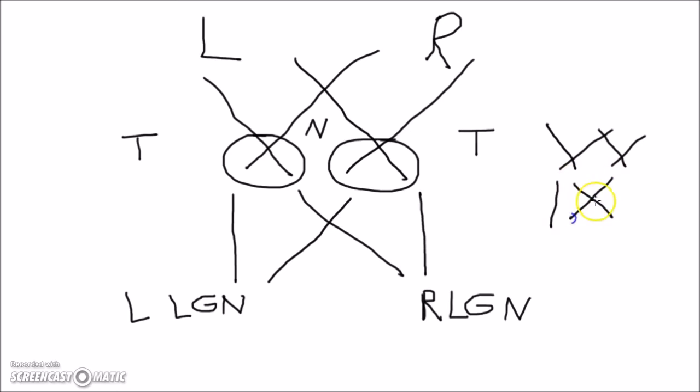You can see that all the information from the left visual field makes its way to the right lateral geniculate nucleus. This makes sense because the right side of the brain controls the left half of the body, and vice versa.